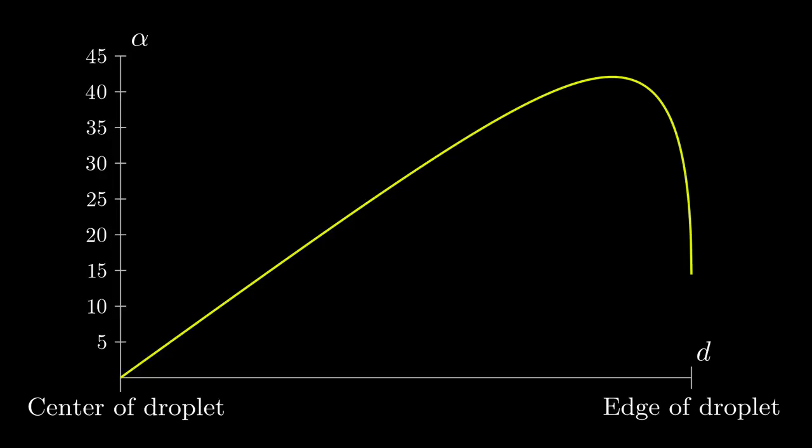Another way to visualize this is to look at a lot of equally spaced incoming rays hitting our droplets. We see that a disproportionate amount of them reflect at or near the maximum angle. On the graph, these rays correspond to input values evenly distributed over the horizontal axis.